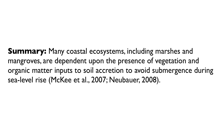Many coastal ecosystems, including marshes and mangroves, are dependent upon the presence of vegetation and organic matter inputs to soil accretion to avoid submergence during sea level rise. McKee et al., 2007; Neubauer, 2008. In this example, the two original passages are used to make a broader point about the importance of vegetation to keeping pace with sea level rise.